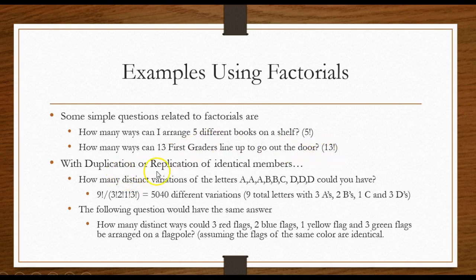And then you'll get the problems with duplication or replication of identical members. In other words, they might say, how many distinct variations of the letters A, A, A, B, B, C, D, D, D, could you have? First count your total number of letters. That will be my numerator, 9 factorial. And then in my denominator, put parentheses around these now. It's 9 factorial divided by 3 factorial times 2 factorial times 1 factorial times 3 factorial. When putting these into a calculator, sometimes students forget that down here in the denominator, I'm multiplying these.